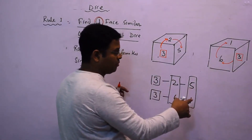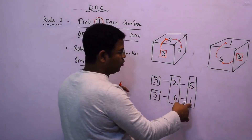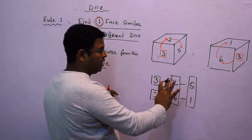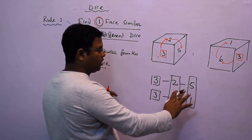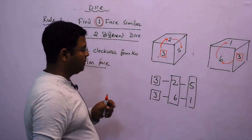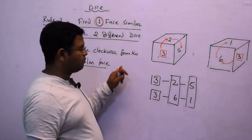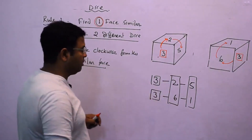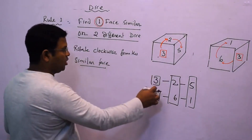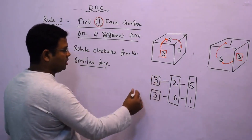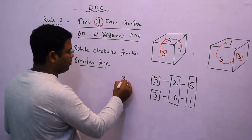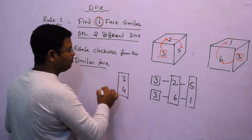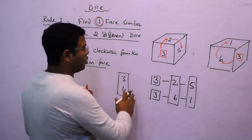We can also say 5 is opposite to 1 and 1 is opposite to 5. So we have found 4 numbers. But the number 4 is not available among these, which means 3 is opposite to 4 and 4 is opposite to 3.